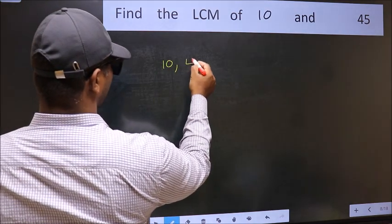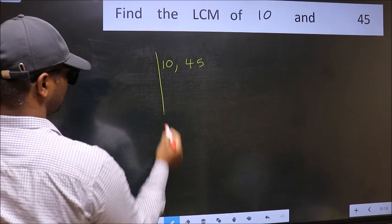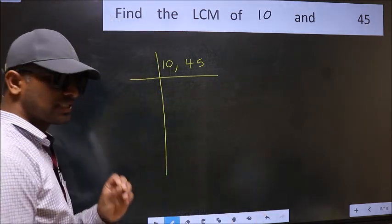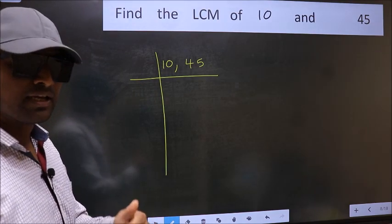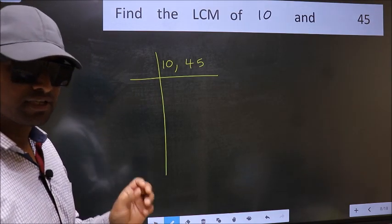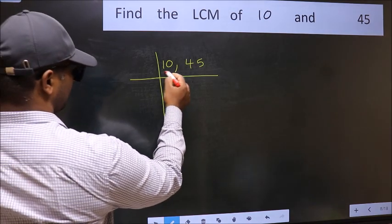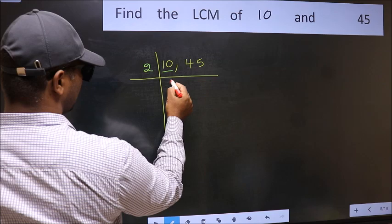10, 45. This is your step 1. Now you should focus on the first number, which is 10 here. 10 is 2 times 5.